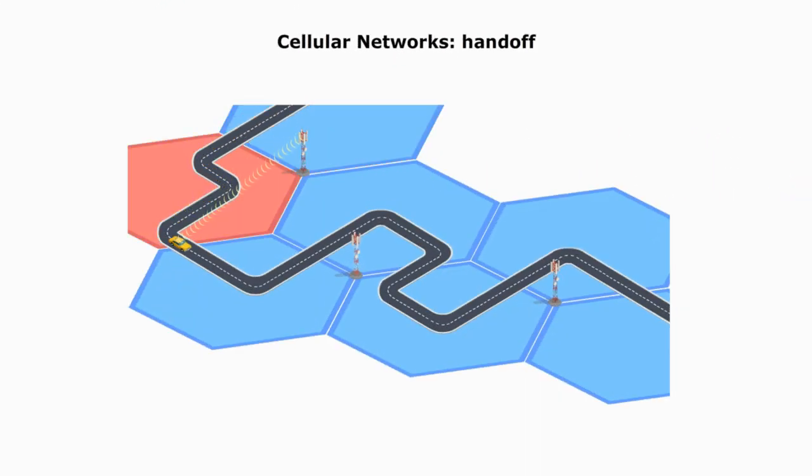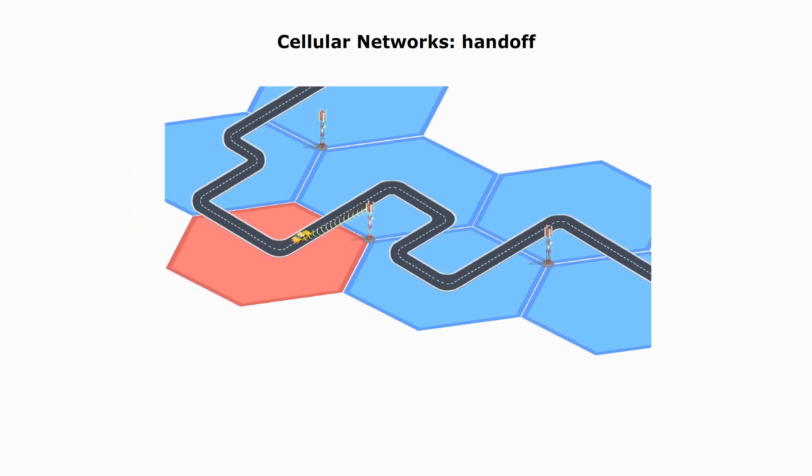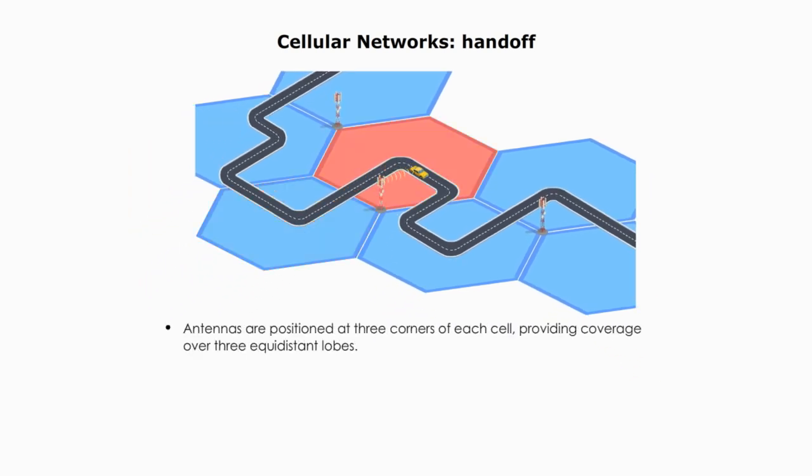Now let's talk about handoff. Antennas are positioned at three corners of each cell, providing coverage over three equal distance loops. When a user passes from one coverage area to another,